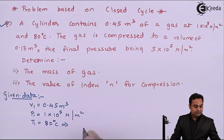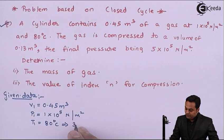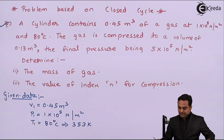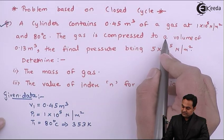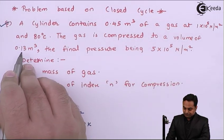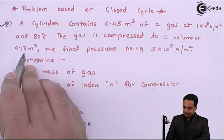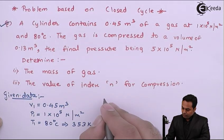Next, the gas is compressed to a volume of 0.13 meter cube. So the process is compression and after compression the volume reduces. At first it was 0.45, now it is 0.13